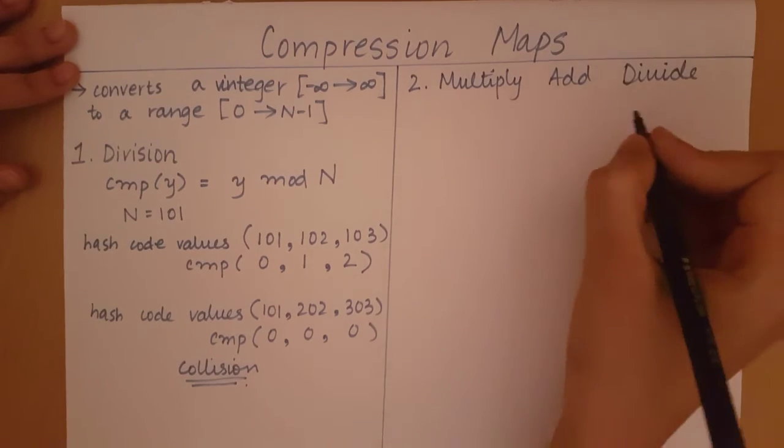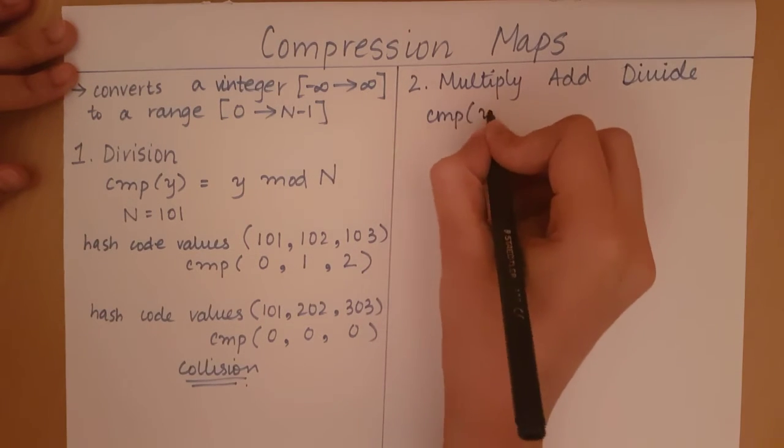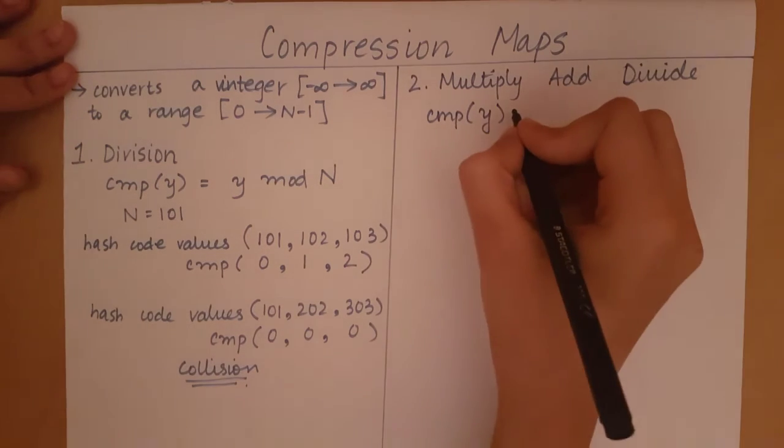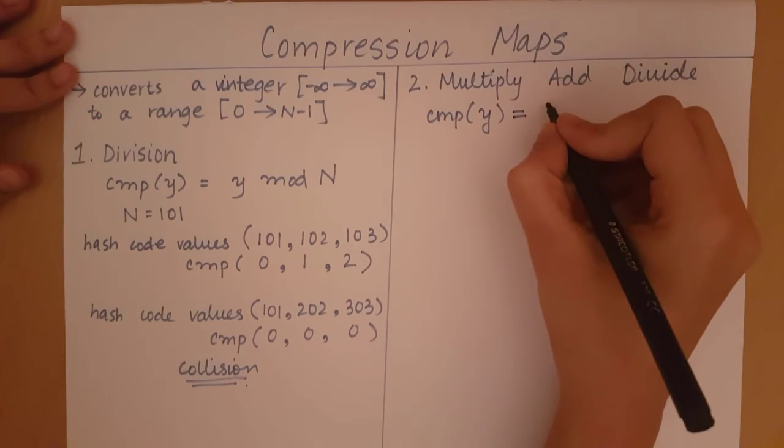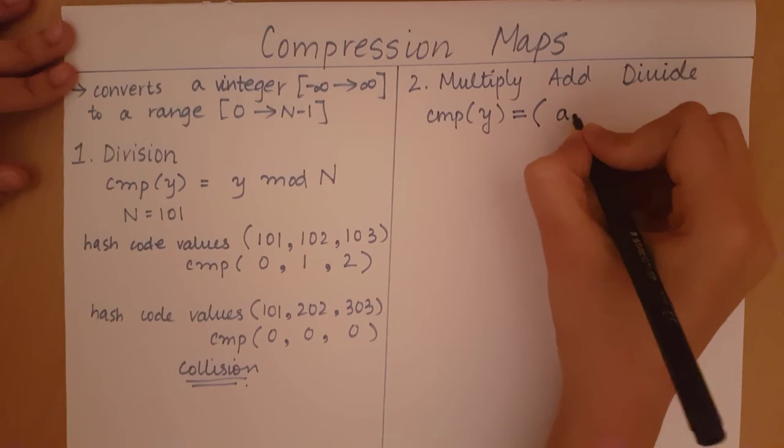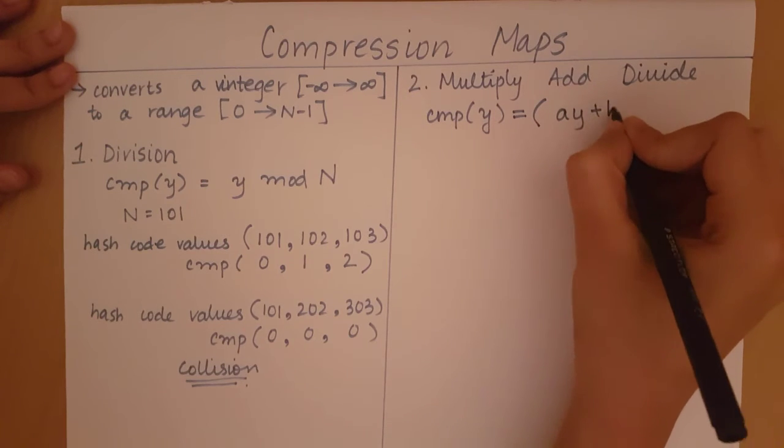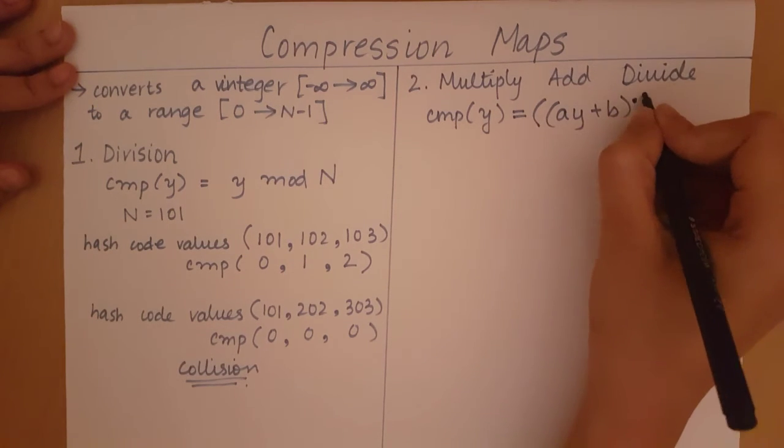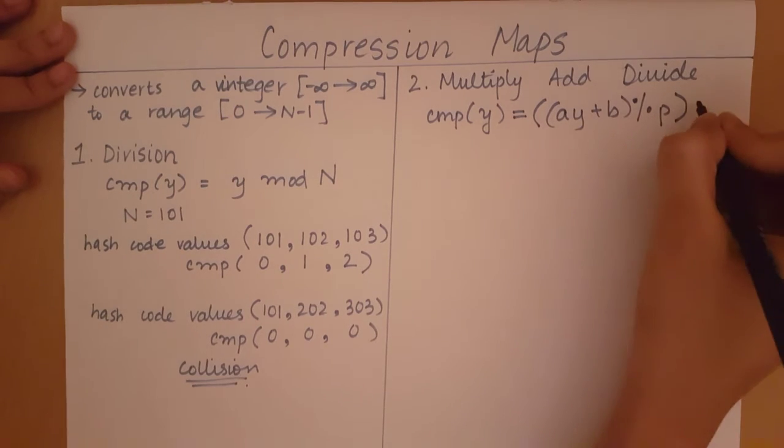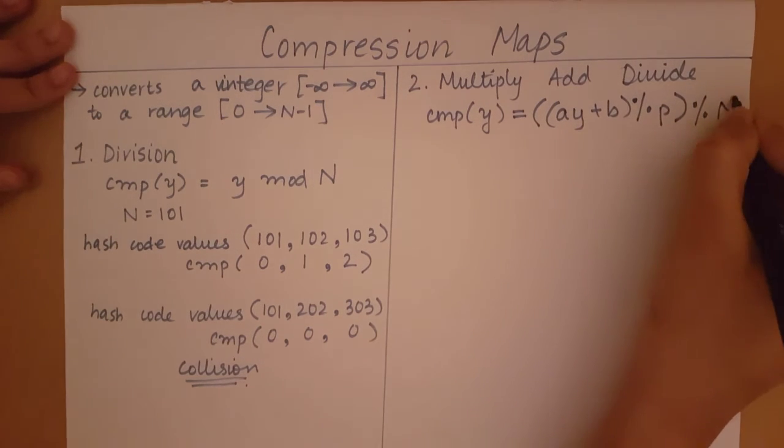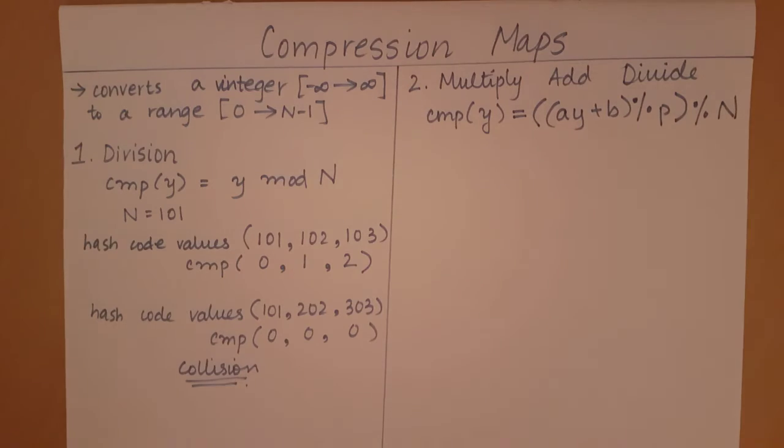So in this, our compression of some value y is going to equal (a times y plus b) mod p, this whole thing mod n. Now let's see what these variables are.